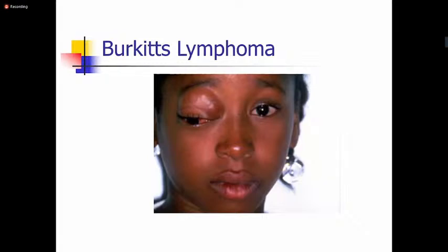Burkitt's lymphoma may also present as a rapidly progressive, painless tumor in the orbit, but it may be associated with constitutional signs of lymphoma including low-grade fever. Diagnosis is usually through biopsy, but bone marrow aspirate or biopsy may also help guide the diagnosis. Management is through chemotherapy.